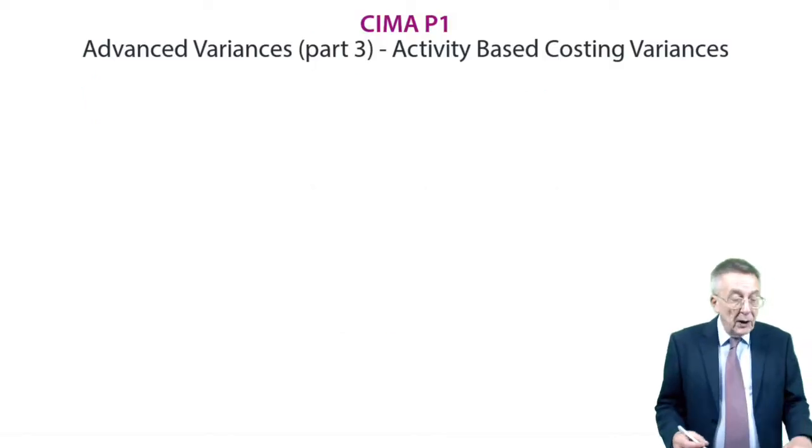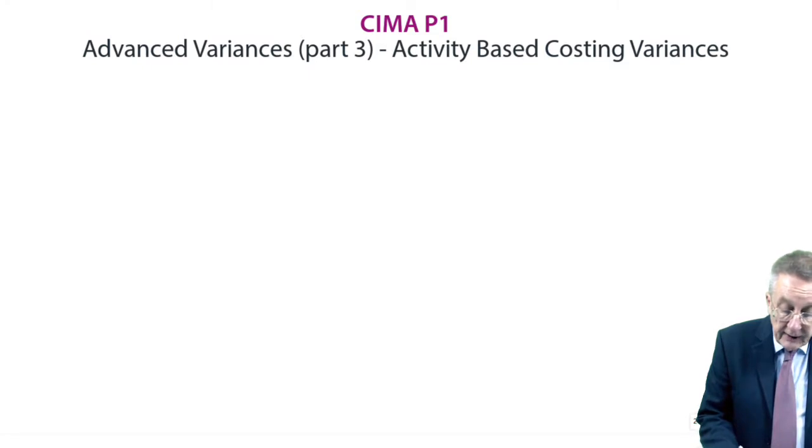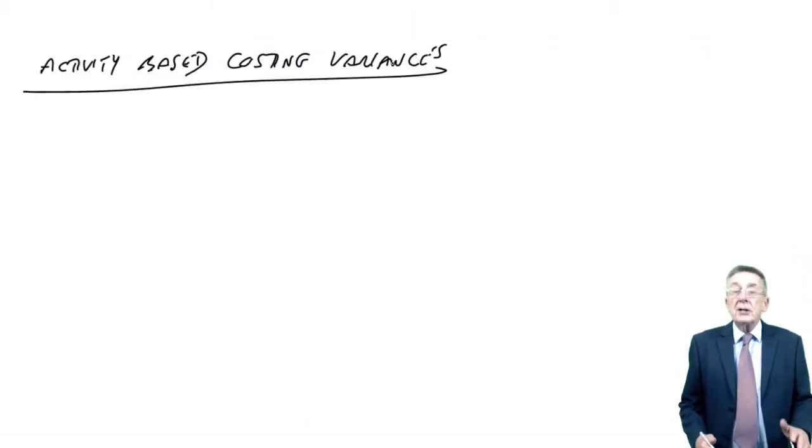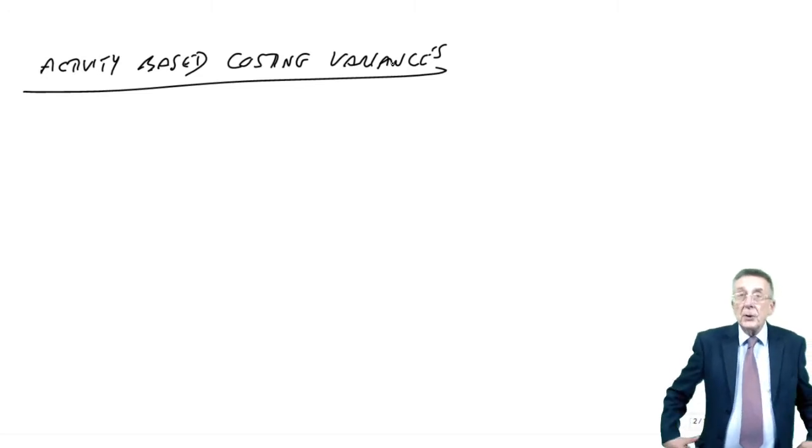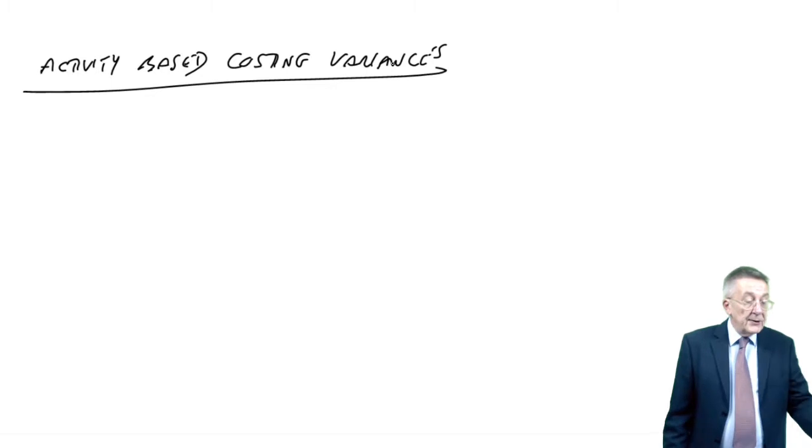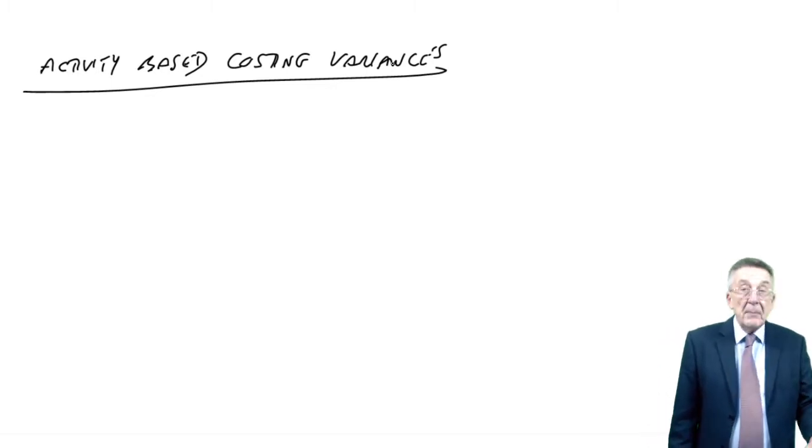The last one is activity-based costing variances. Now, this sounds as though it's going to be very challenging. In fact, to the level it was asked in the exam, it isn't at all. It's only been asked once, and it was exactly the same level as in my example six, which I'm about to go through.